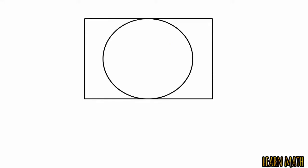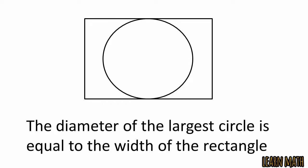Let's begin to solve the question. If we have a rectangle and this is the largest circle inside the rectangle, the diameter of the largest circle will be equal to the width of the rectangle as you can see from the picture.